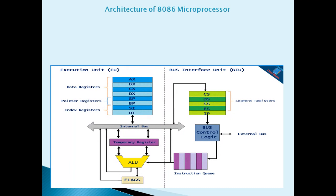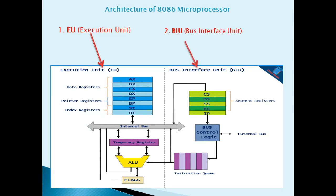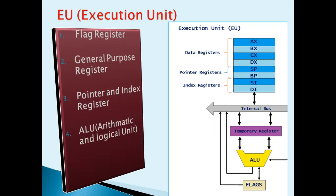This architecture can vary with various books, so I have drawn this architecture from one book. There are two functional parts: first is the Execution Unit and second is the Bus Interface Unit in the architecture of 8086 microprocessor. Let us see first the Execution Unit.